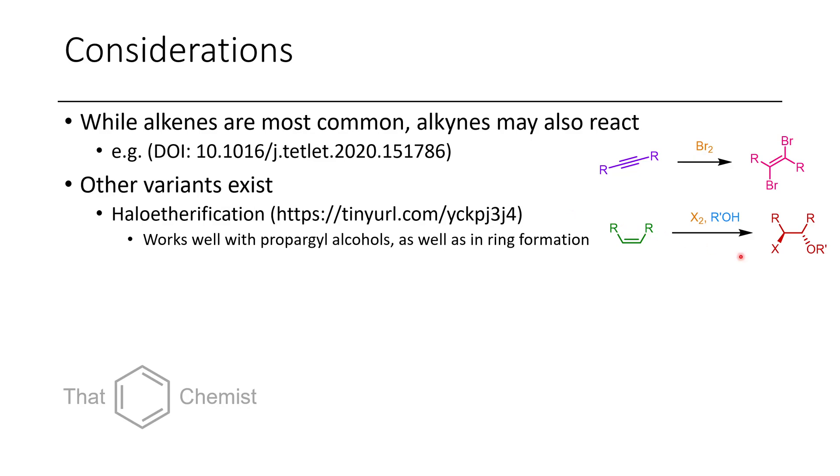There's also other variants. So you could use an alcohol. Here I've reduced the DOI using this tiny URL because it was quite a cumbersome long DOI. So here, essentially, instead of water reacting, you just have the alcohol attacking the halonium. So these don't work too well most of the time, but if you use a propargyl alcohol they tend to work well. And if you're doing an intramolecular reaction for ring formation, these can work fairly well as long as they follow Baldwin's rules, which is a topic we'll cover in a future video.